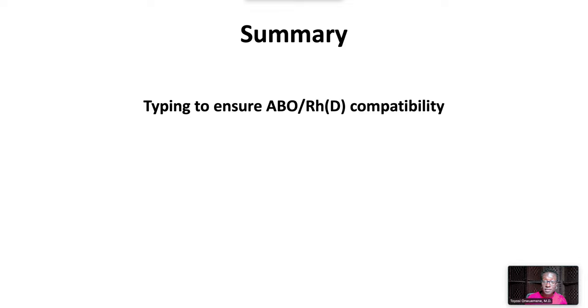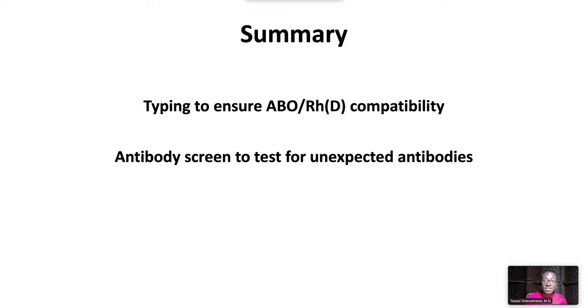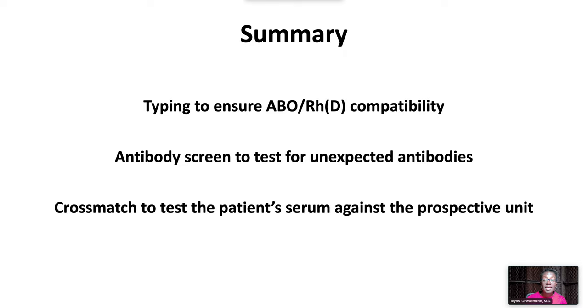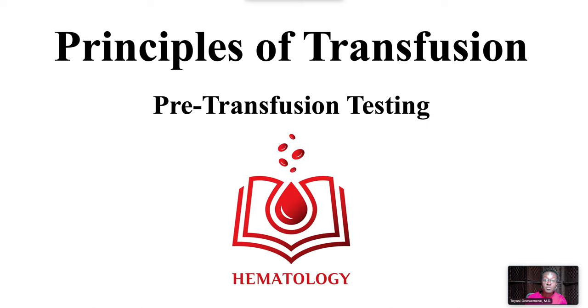In summary, pre-transfusion testing involves typing to ensure ABO-RH compatibility, an antibody screen to test for unexpected antibodies, and a cross-match to test the patient's serum against the prospective unit. This ends our video on principles of transfusion pre-transfusion testing.